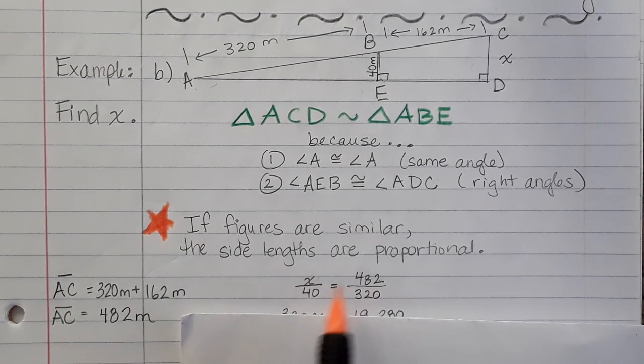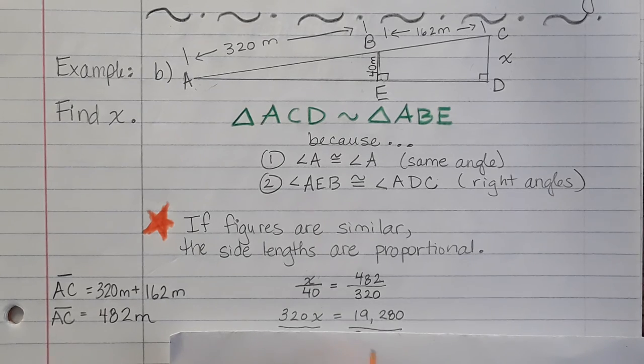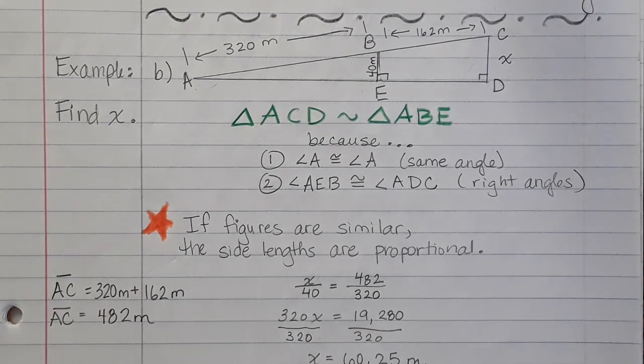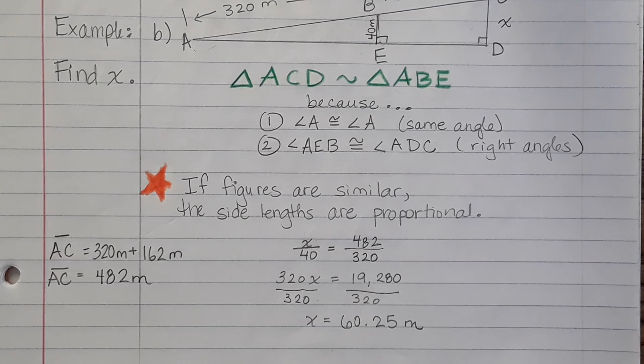We would cross multiply and solve the equation. And I can find that X is 60.25 meters.